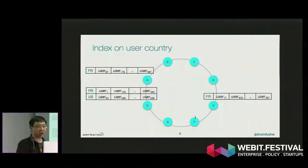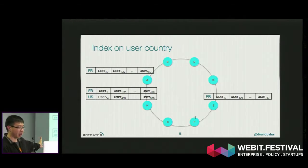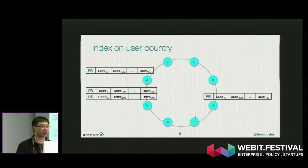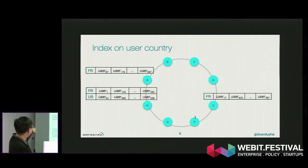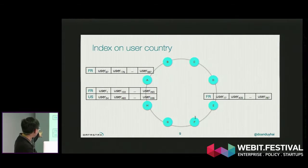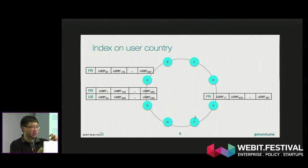In Cassandra, the index is distributed. For example, here I have a cluster of eight Cassandra machines. Imagine a user table with user name, first name, last name, country. If I create an index on user country, the index will be a reverse table where, for example, on some machines you have 'FR' for France pointing to some users, and on another machine you also have 'FR' pointing to other user IDs. The indexes are distributed and stay on the same machines as the original data.